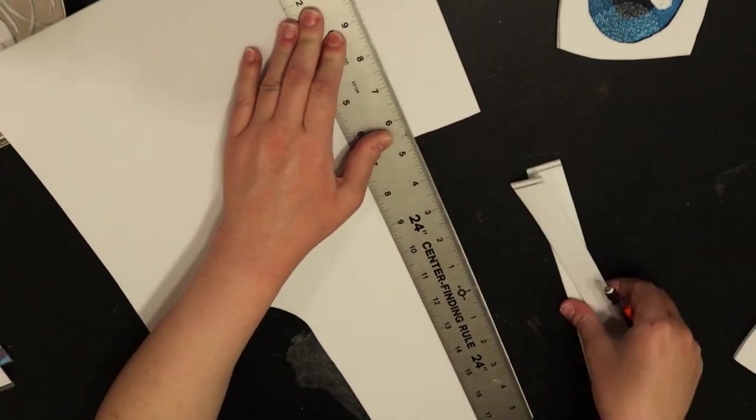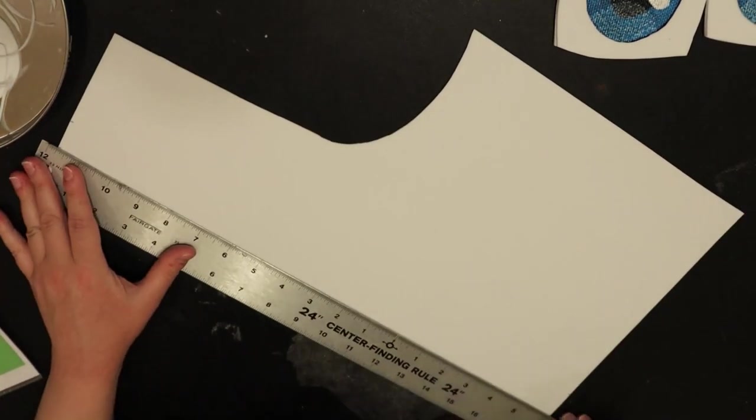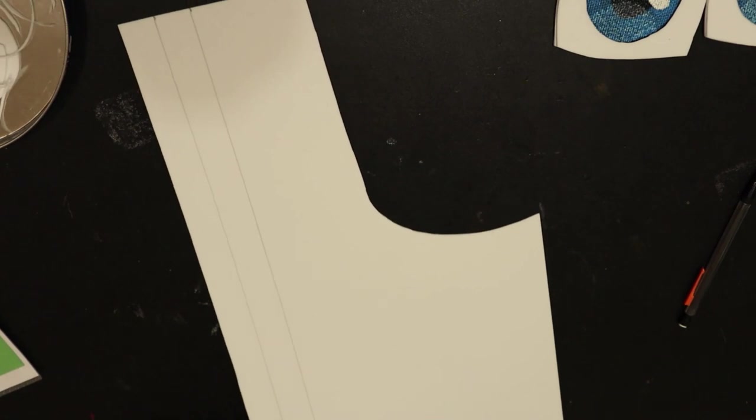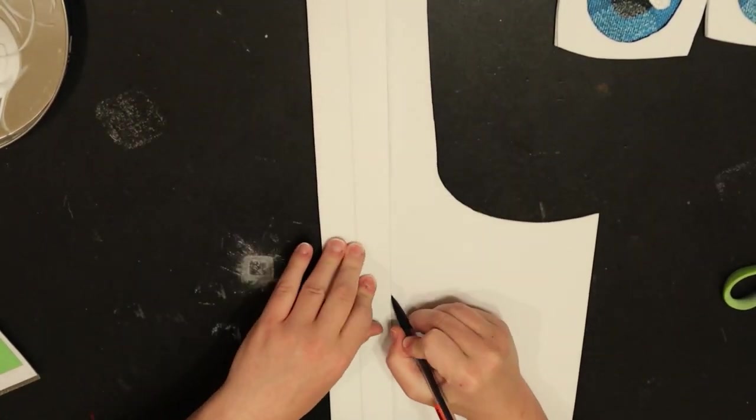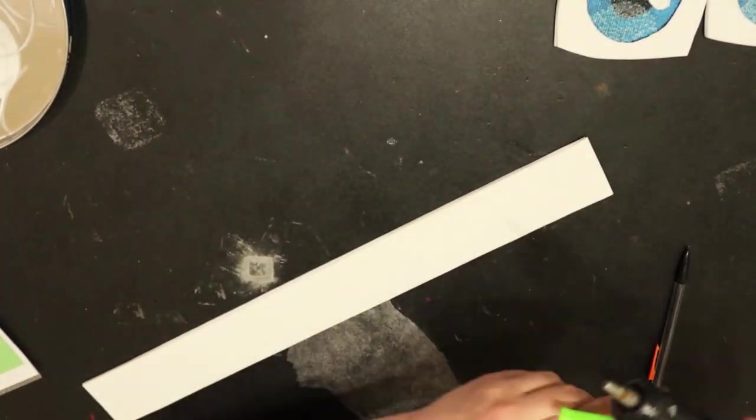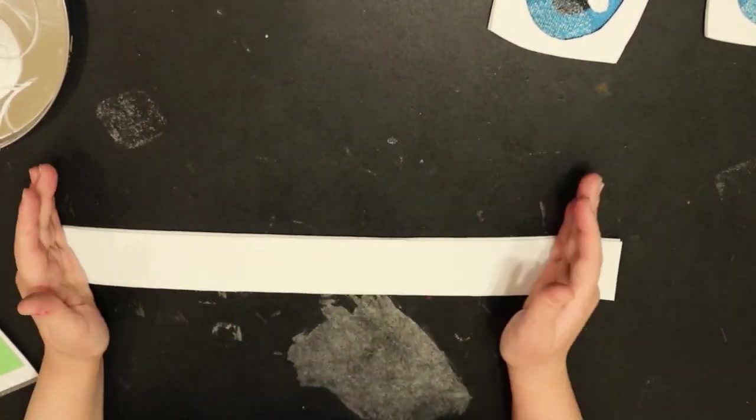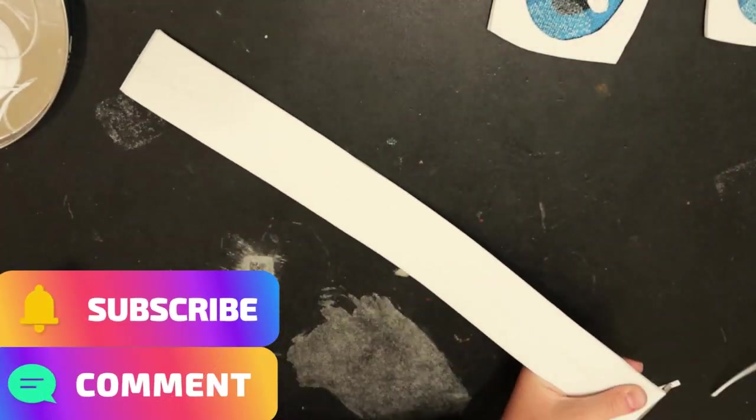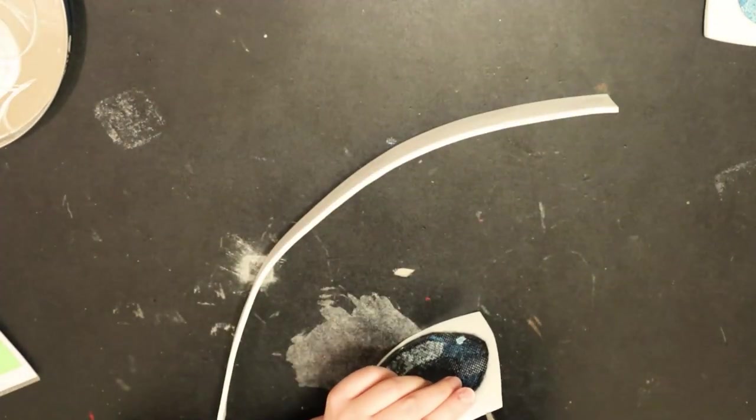All right so now I am going to be making some strips to go around the outside edge of the eyes to give them some depth which will give them that 3D follow me eye effect. So when you move your head wearing the fursuit head it looks like the eyes are following you. And I'm also going to double this foam up as well give it some durability. And then I'm going to cut it in half because I don't need it that big so that way I have two strips for both of the eyes.